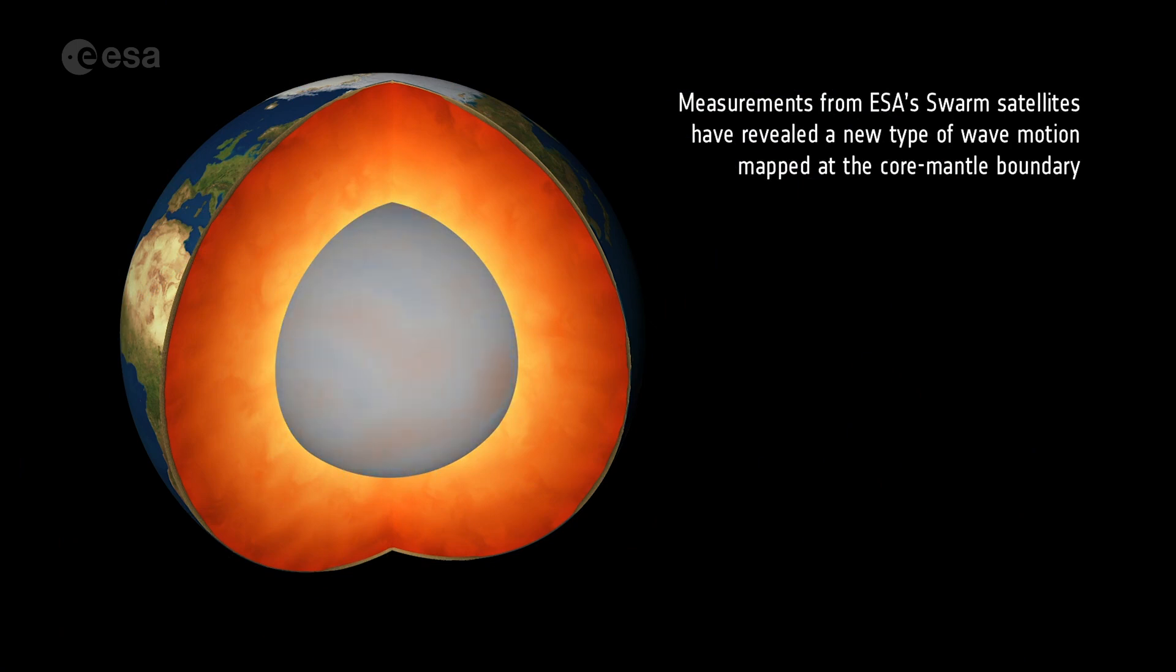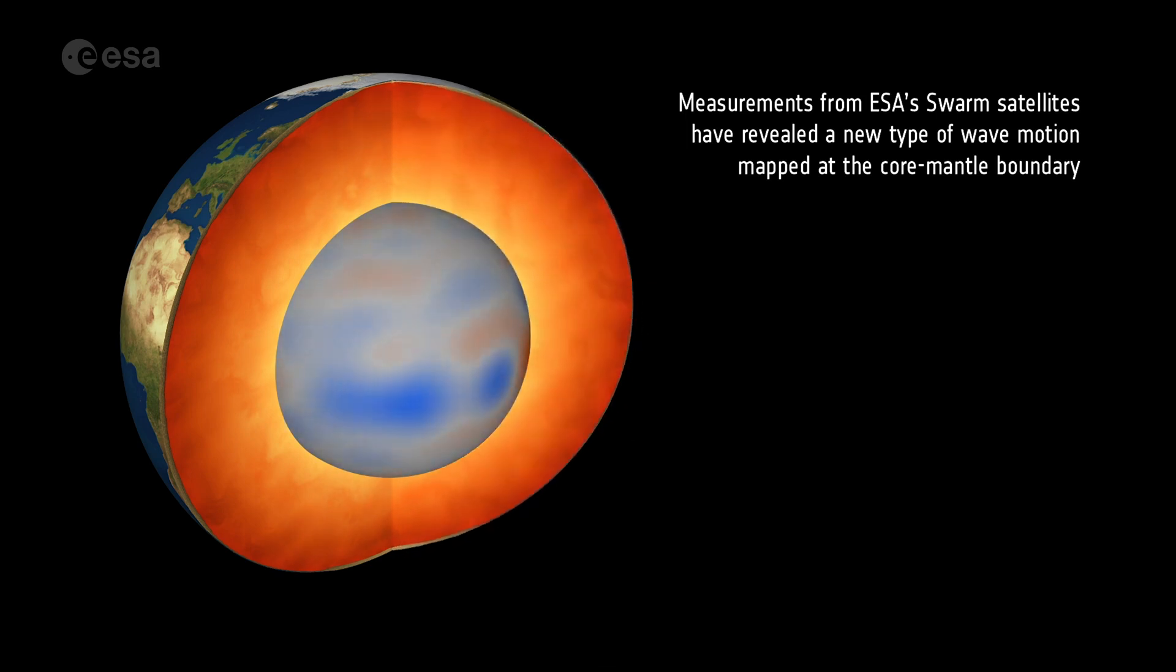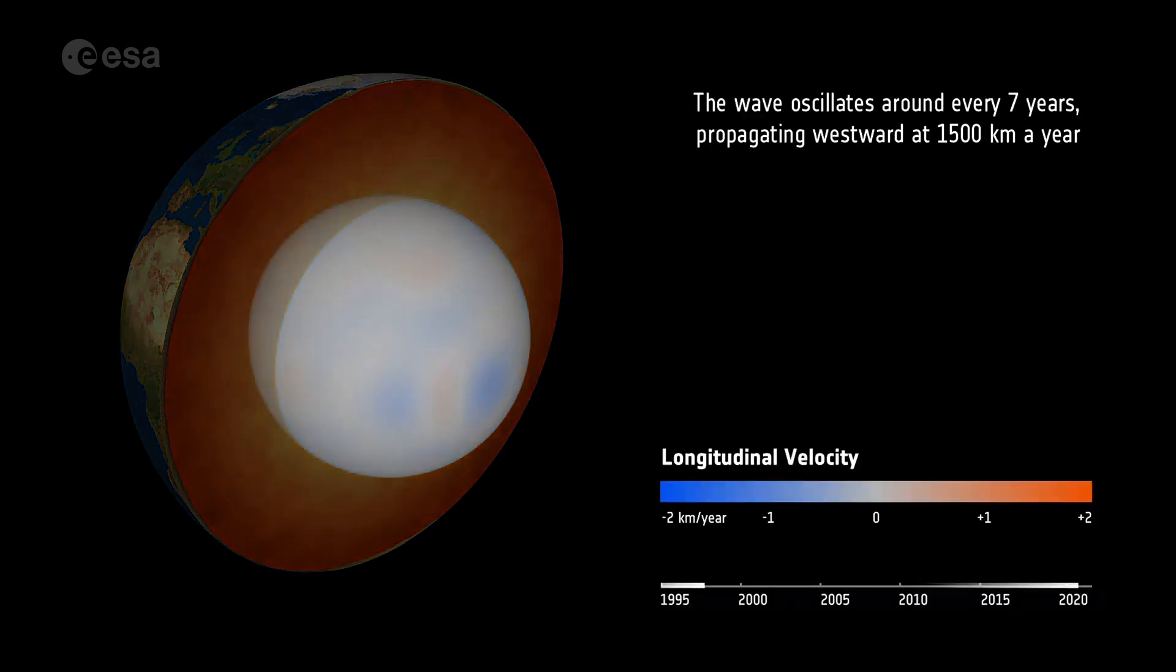Measurements from ESA's Swarm satellites have revealed a new type of wave motion mapped at the core-mantle boundary. The wave oscillates around every seven years, propagating westward at 1,500 kilometers a year.